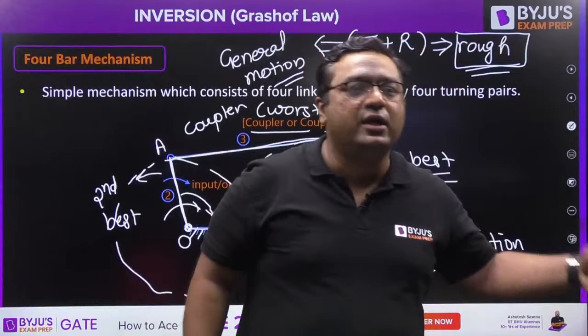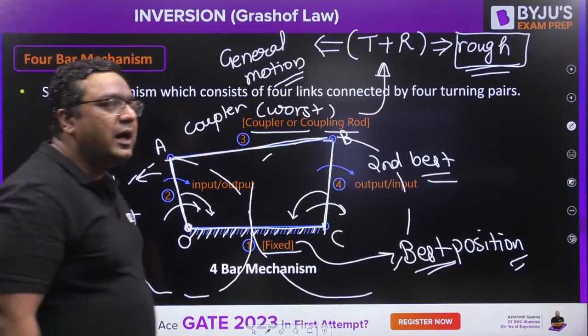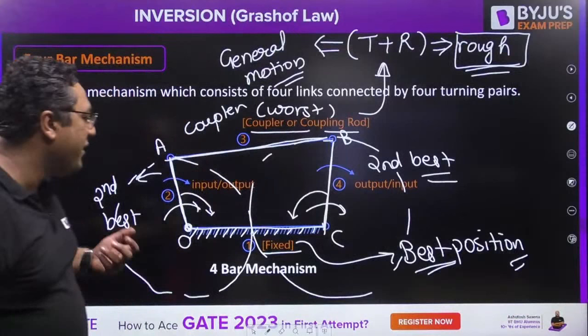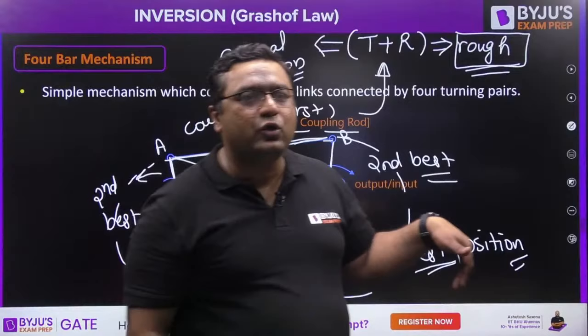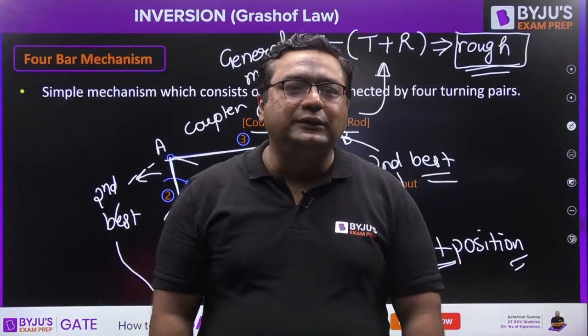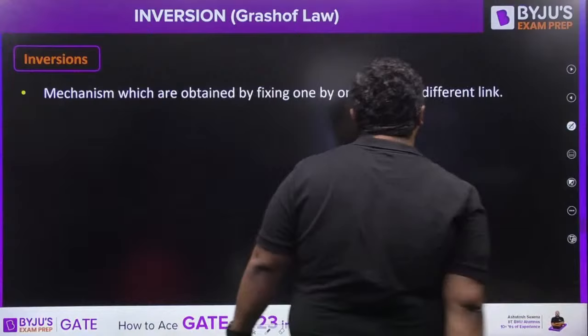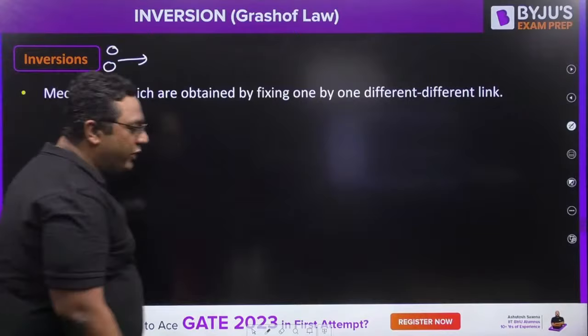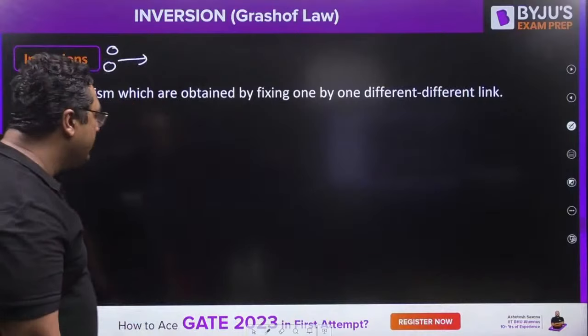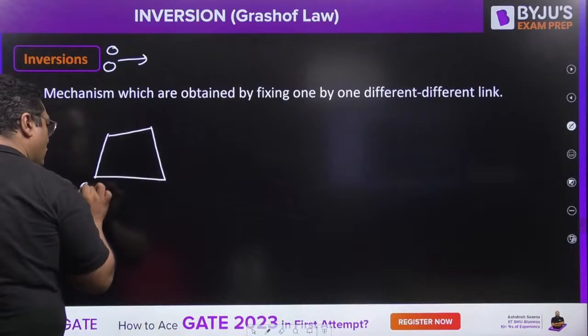Now let us talk about what inversions actually are. If we have a kinematic chain with four links — O, A, B, and C — whenever you fix a link of a kinematic chain, it becomes a mechanism. So if you want to fix a link, you have four options: fix OA, fix AB, fix BC, or fix OC — only one link at a time.